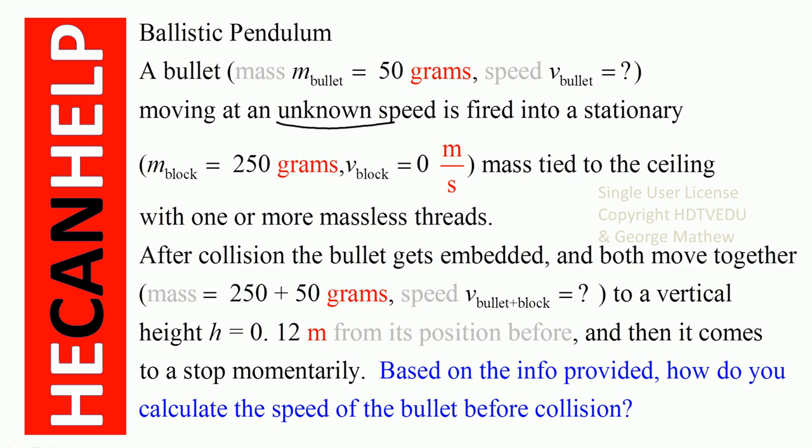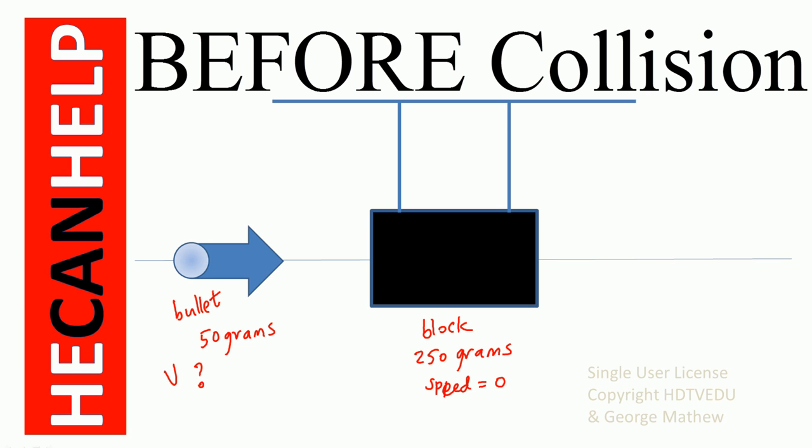Ballistic pendulum: a bullet moving at an unknown speed is fired into a stationary mass tied to the ceiling with one or more massless threads. After collision, the bullet gets embedded and both move together to a vertical height h equal to 0.12 meters from their original position, then come to a momentary stop. The question is: what is the velocity of the bullet before collision, given that the block is initially at rest?